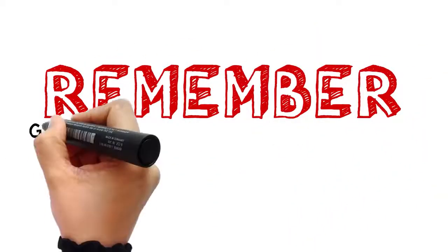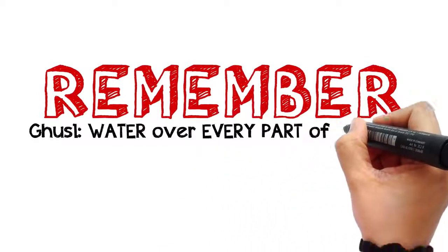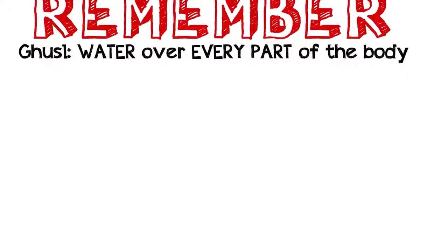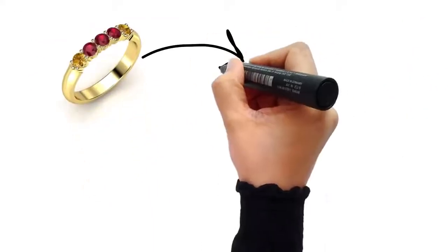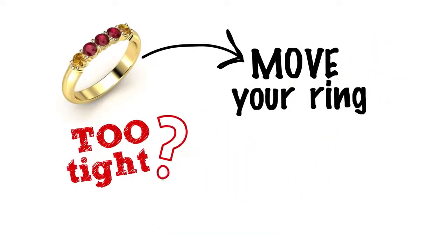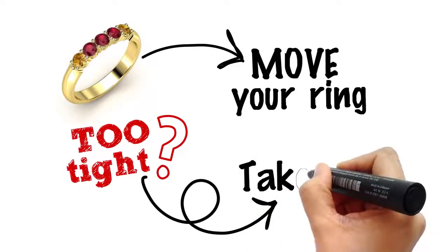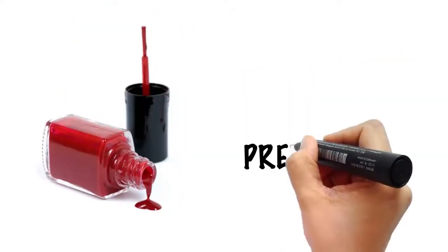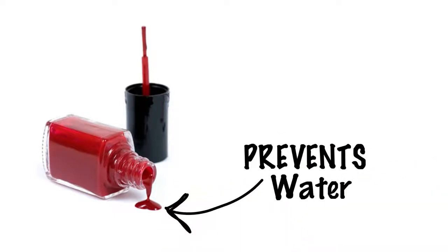Ghusl essentially means letting water run over every part of your body. So if you are wearing a ring, you should move it, and if it is so tight that the water won't reach the skin underneath, then you have to remove it. Cosmetic items which form a barrier and prevent the water from reaching your skin must also be taken off.